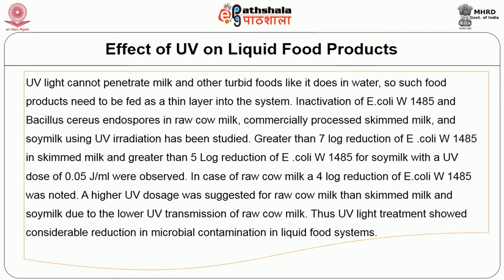UV light cannot penetrate milk and other turbid foods like it does in water, so such food products need to be fed as a thin layer into the system. Studies on inactivation of E. coli W1485 and Bacillus cereus endospores in raw cow milk, commercially processed skim milk, and soy milk using UV irradiation showed greater than seven log reduction of E. coli W1485 in skim milk and greater than five log reduction in soy milk with a UV dose of 0.05 joules per ml. In raw cow milk, a four log reduction was noted, and a higher UV dosage was suggested due to lower UV transmission.